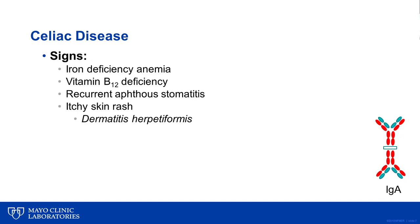In addition, patients can have other signs of disease, including iron deficiency anemia, vitamin B12 deficiency, recurrent aphthous stomatitis, commonly known as canker sores, or a pruritic blistering rash called dermatitis herpetiformis.